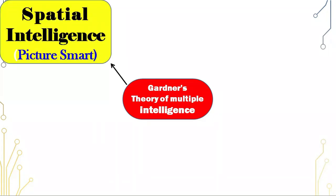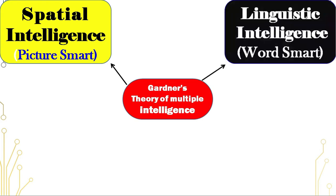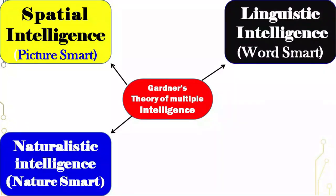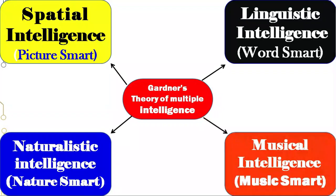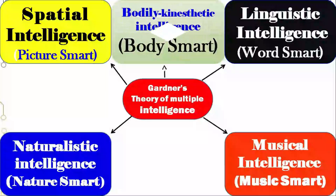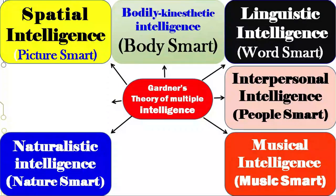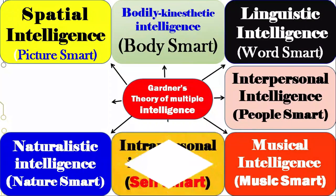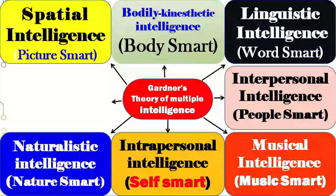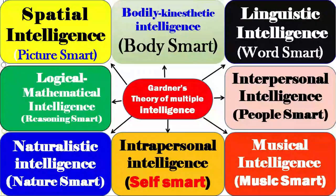Let us know Gardner's theory of multiple intelligences. Spatial intelligence, which is called picture smart. Linguistic intelligence, otherwise called word smart. Naturalistic intelligence, which is called nature smart. Musical intelligence, which is music smart. Bodily kinesthetic intelligence, which we call body smart. Interpersonal intelligence, we call it people smart. Intrapersonal intelligence, we call it self smart. And logical mathematical intelligence, which we call reasoning smart.